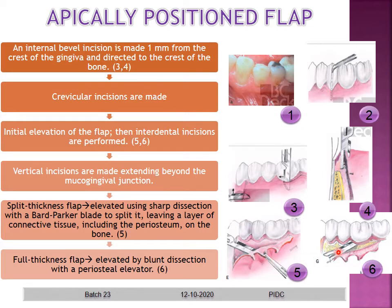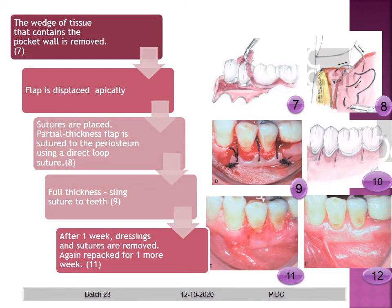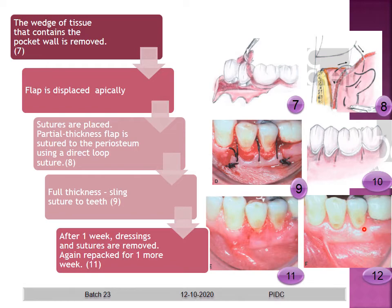For a full-thickness flap, blunt dissection with a periosteal elevator is performed. A wedge of interdental tissue is removed with a curette and the flap is displaced apically, then sutures are placed. For a partial-thickness flap, a direct loop suture is placed; for a full-thickness flap, a sling suture is placed around the tooth for support. After one week the dressing is removed. The clinical pictures show the increased amount of attached gingiva.